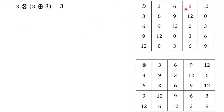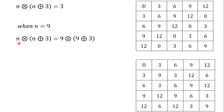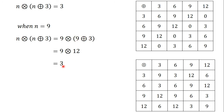Let's try out the next number, which is 9. When n equals 9, the expression n times (n plus 3) becomes 9 times (9 plus 3). From the addition table, 9 plus 3 is 12. So we have 9 times 12. From the multiplication table, 9 times 12 is 3. So n equals 9 will also satisfy the equation, because 9 times (9 plus 3) gives us 3.